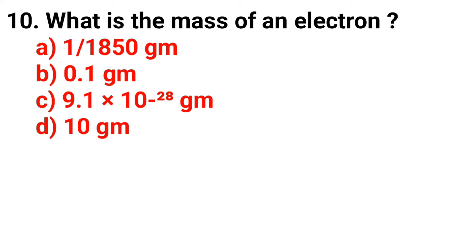Question number 10: What is the mass of an electron? The answer is option C, 9.1 times 10 to the power minus 28 grams.